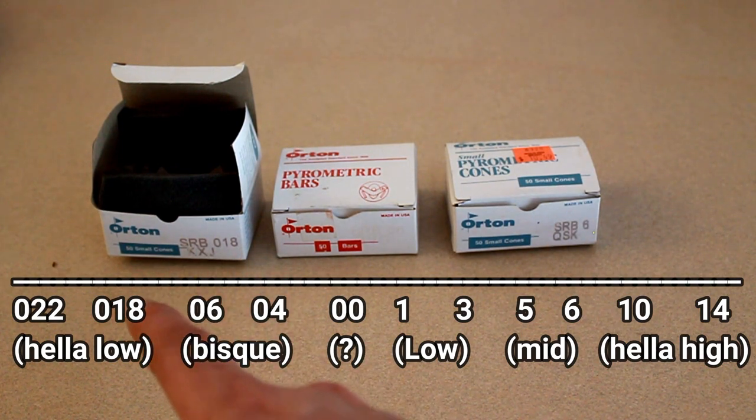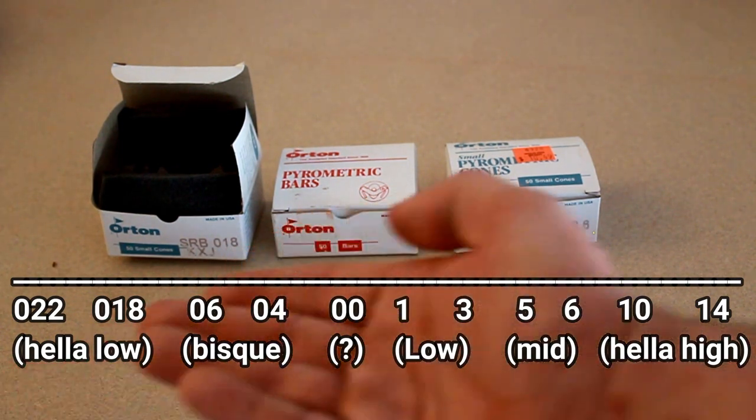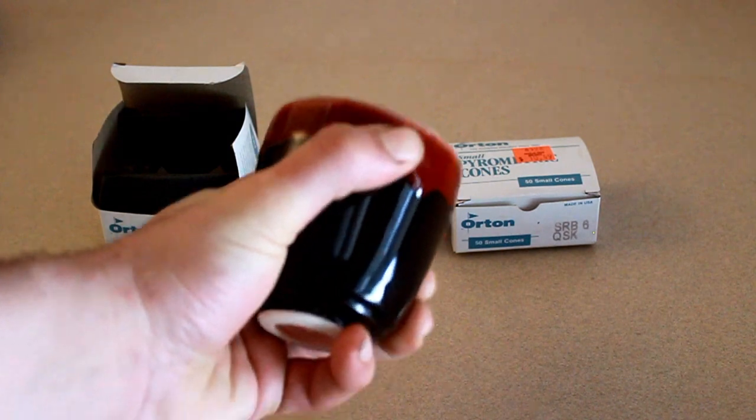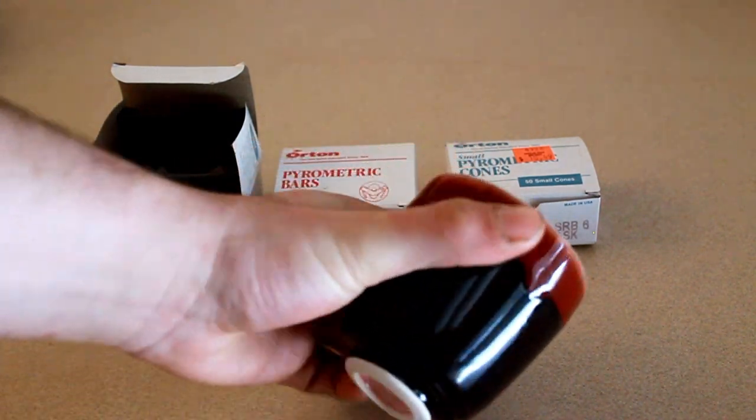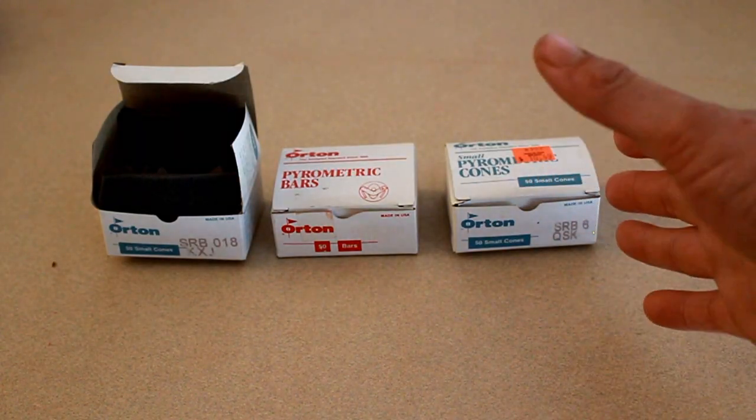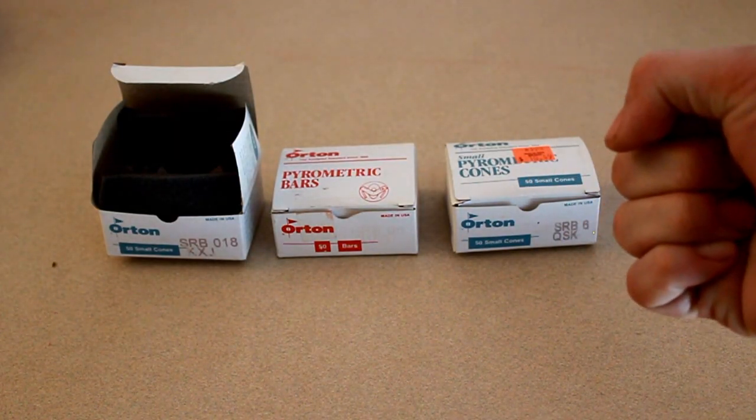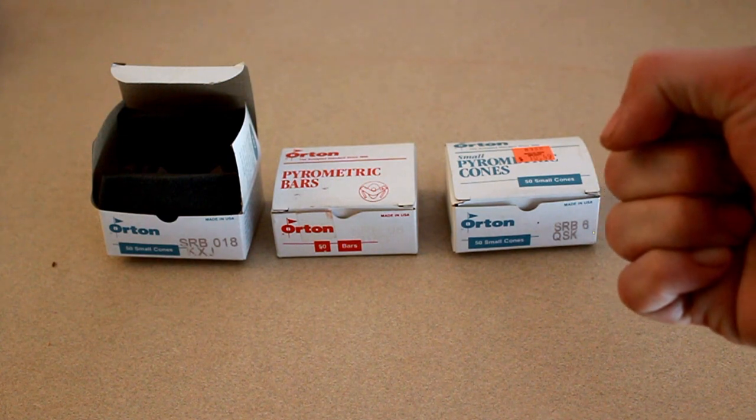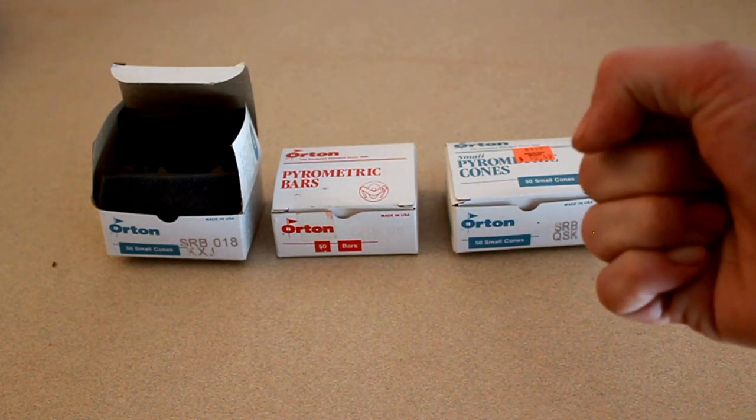So when you're going to a store and you want to get something that's cone 6, do not put the zero in front of it. Or vice versa. If you want something that's cone 06, don't get cone 6. They are different. Do you hear me? They are different. If you do not remember this, I will find you and I will... I'm sorry, it's like a pet peeve of potters.